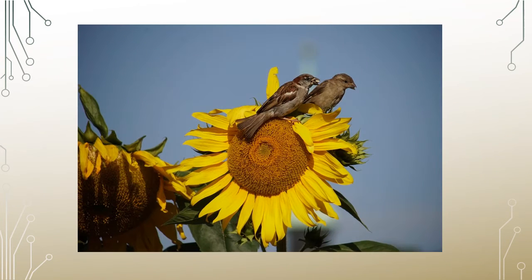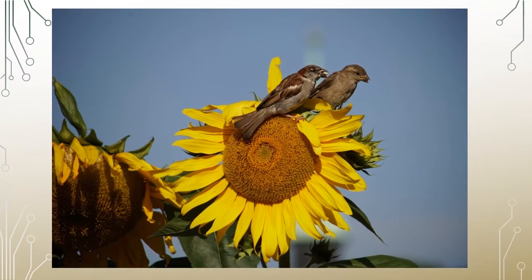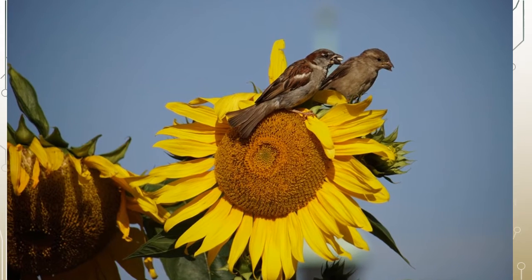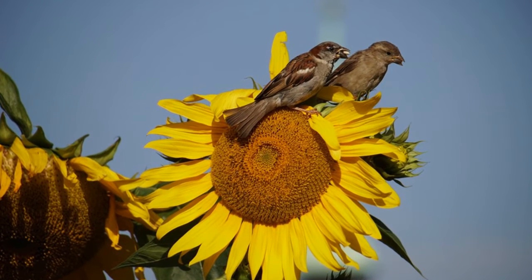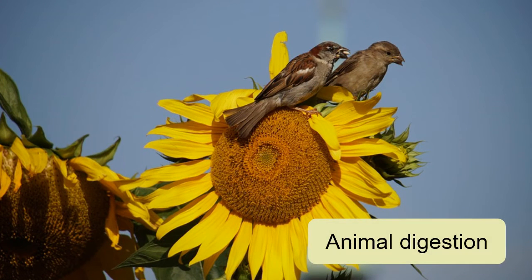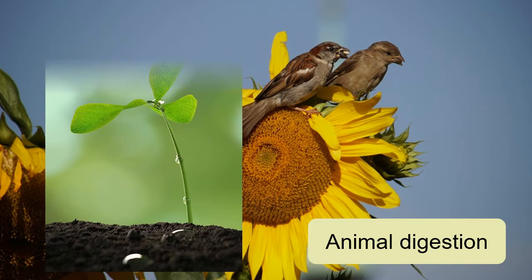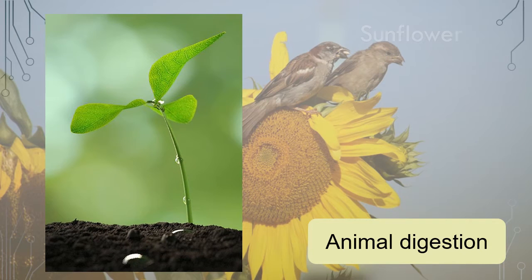Some seeds are eaten by animals, like a bird eating a sunflower seed. Later, when the animal leaves droppings, an undigested seed may fall into the perfect place for the seed to grow.